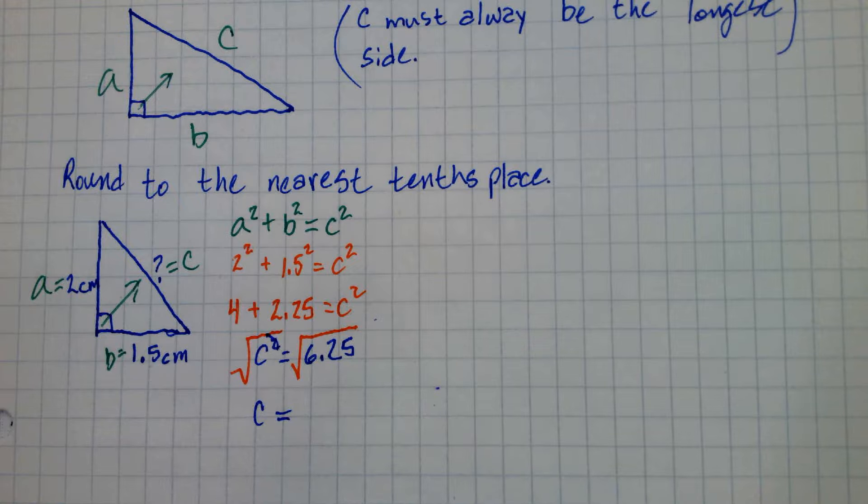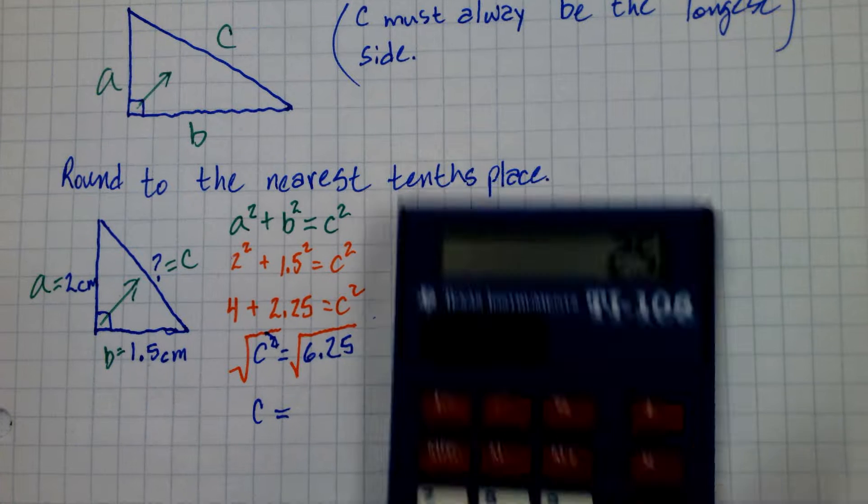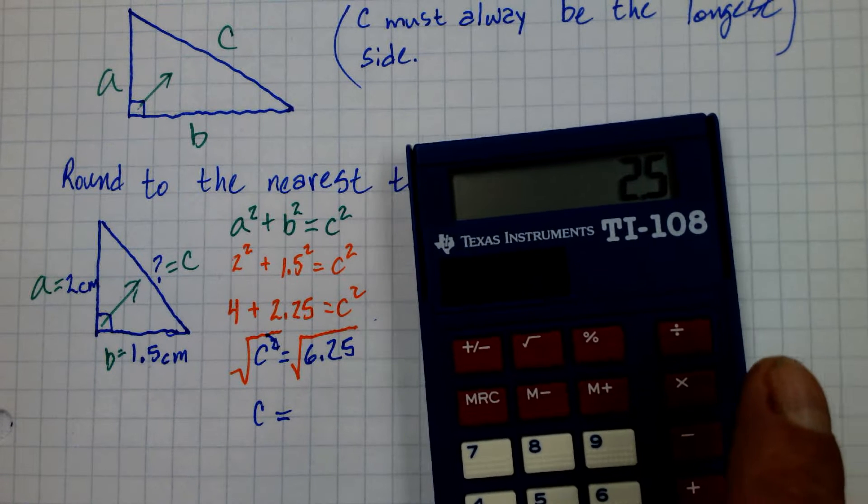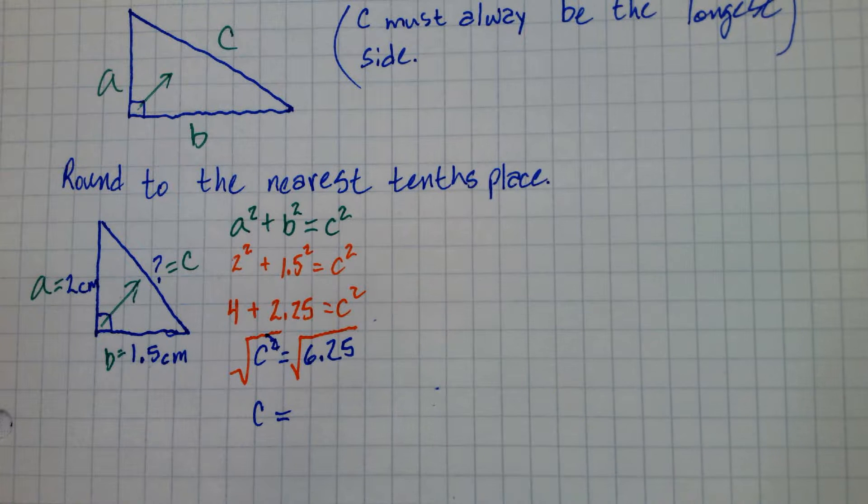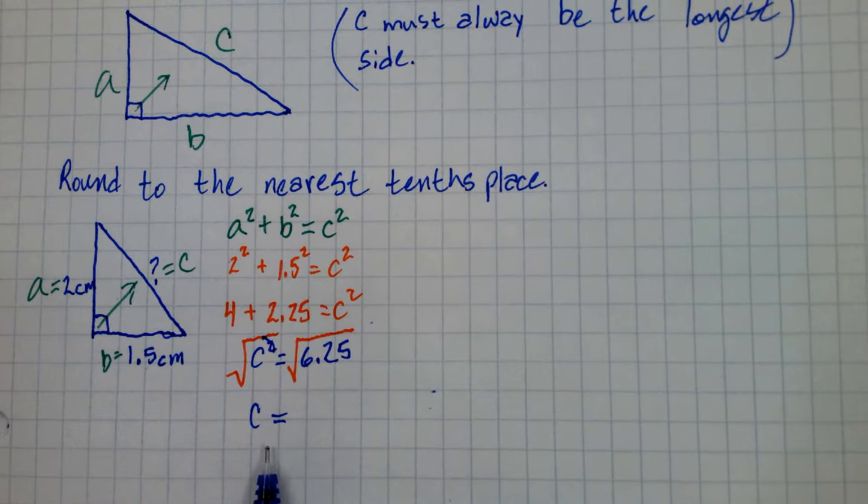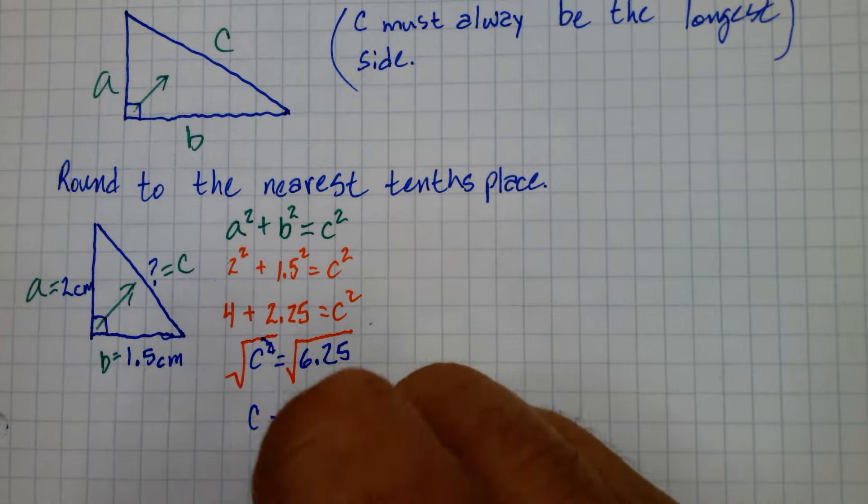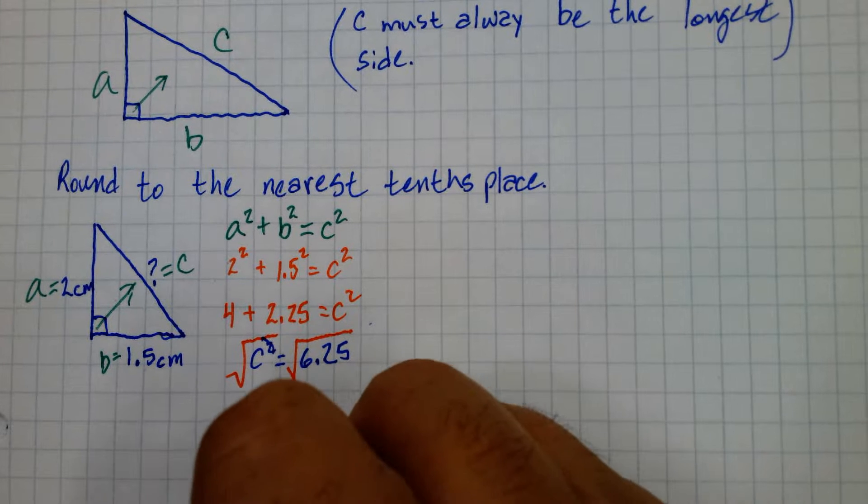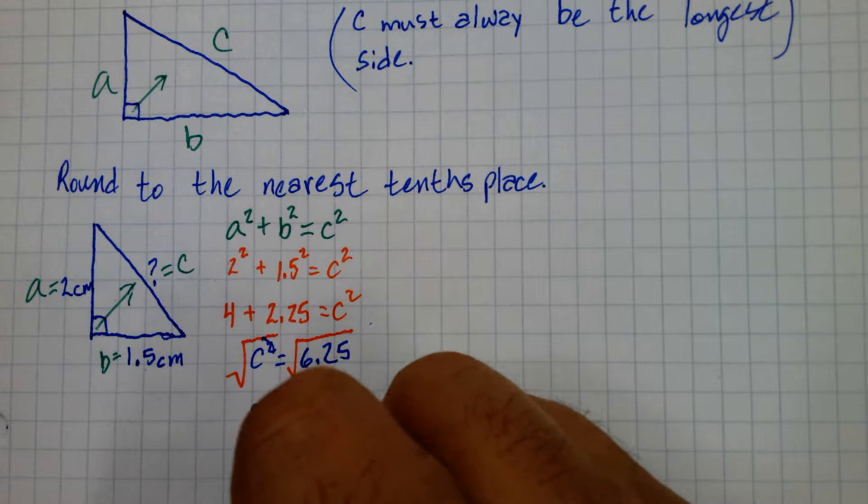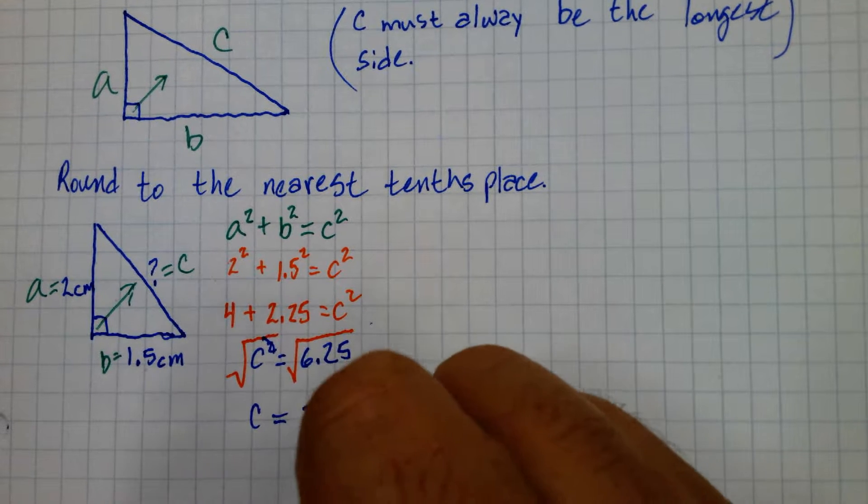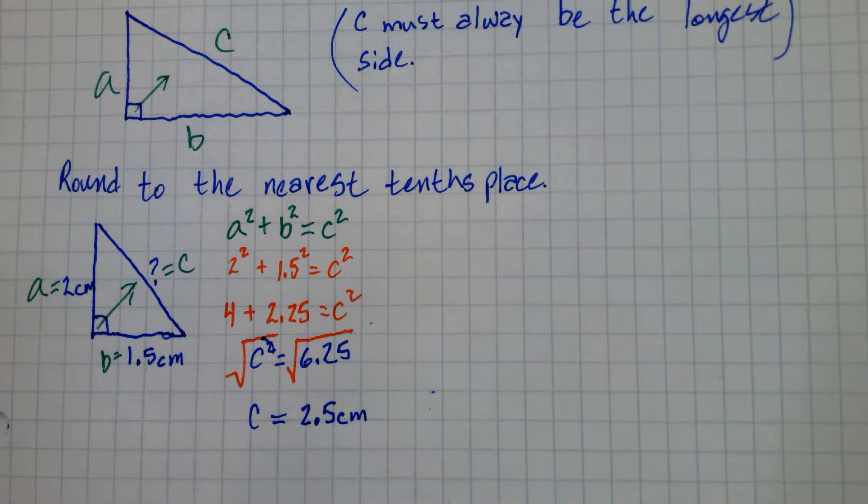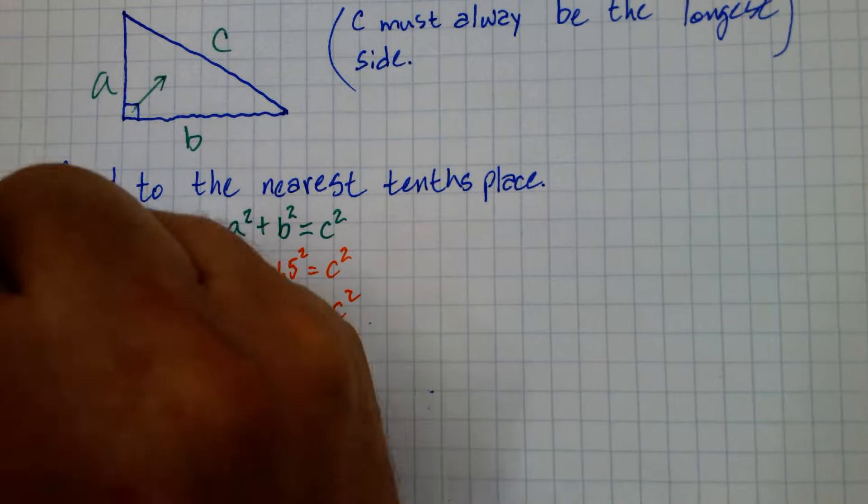And many times we're going to get one of those irrational numbers. This time we're not, though. What does C turn out to be? What's the square root of 6.25? It's 2.5. So it's exactly 2.5. A lot of times we have to put the approximate equal signs, the little squiggly ones. But this is 2.5 centimeters. So that's number one.